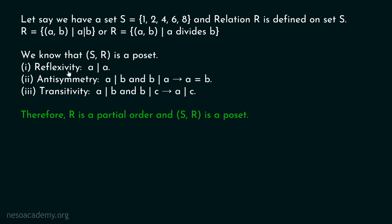Reflexive property is satisfied because A divides A. Anti-symmetric property is satisfied because if A divides B and B divides A, then obviously A equals B. Transitivity is also satisfied because if A divides B and B divides C, then A must divide C. Therefore, R is a partial order and (S, R) is a poset.